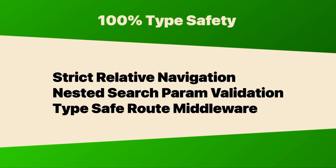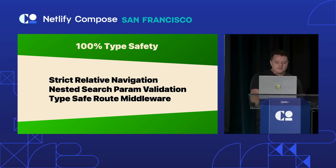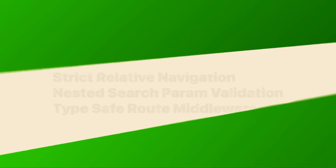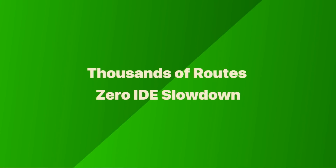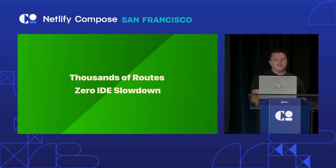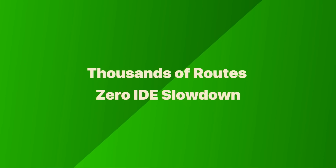Beyond these basics, we've gone the extra mile to support things like strict relative navigation, nested search parameters, type-safe route middleware, and a lot of other next-gen routing features. We've made sure the TypeScript language service provider can scale to tens of thousands of routes with the most complex types, all inferring from schemas, Zod, and anything else — without compromising any IDE performance at all. Whether you're building an app with 10 routes or 10,000, you won't notice a difference in your IDE.